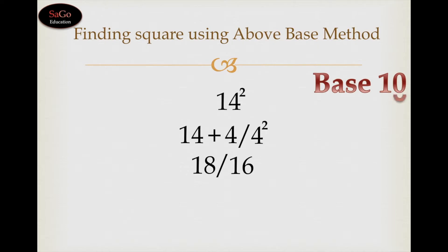Because we have only one zero in the base 10, plus 8 makes 9, write 9 and 1 as it is. 14 square is 196.